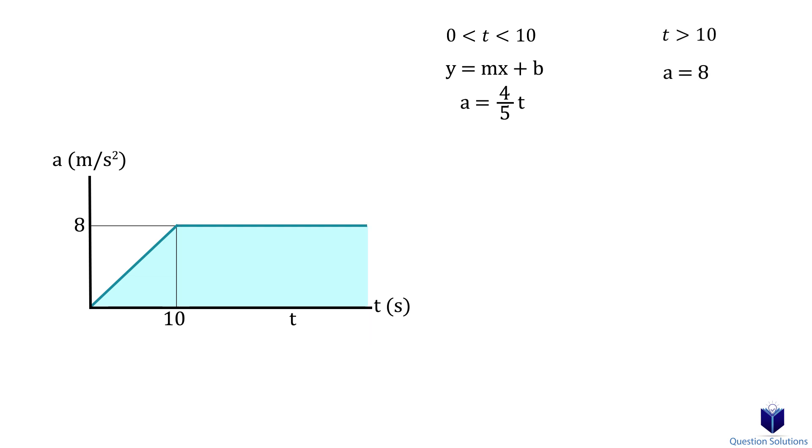Now we will write a velocity equation for the first segment. Remember that velocity can be found by finding the area under an acceleration versus time graph, so in other words we can take the integral of each segment.